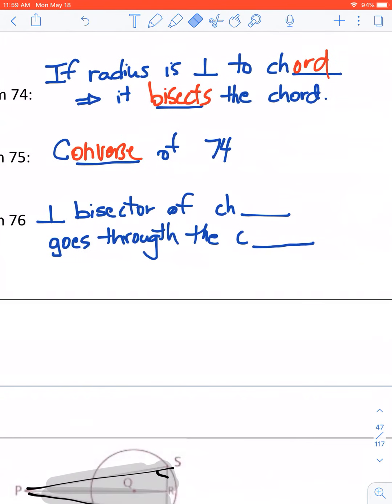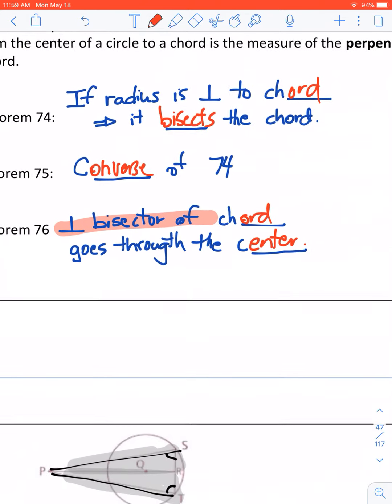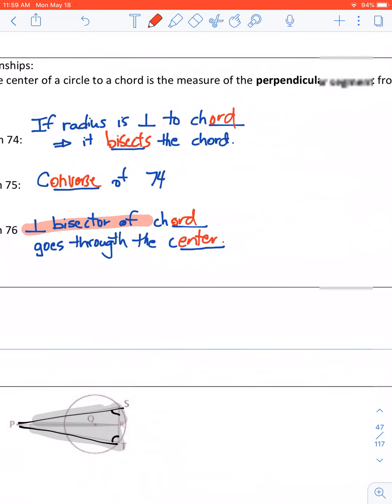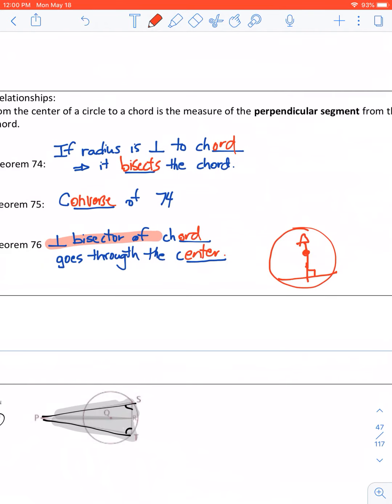Finally, perpendicular bisector of a chord goes through the center. So you've got a chord and you've got a perpendicular bisector. Well, that perpendicular bisector has to go through the center. Not exactly well drawn there, but you get the idea. So again, if you're perpendicular and you're a bisector.